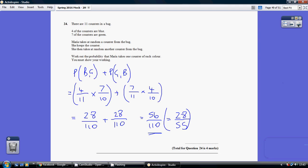Question 24. We're looking for one of each color. We can either get a blue then a green, or green and then a blue.